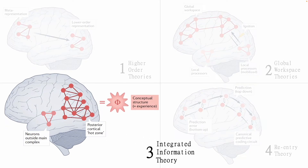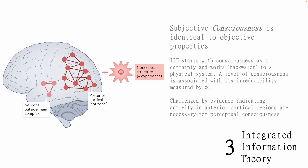Our third theory is integrated information theory. Seth and Bain describe how integrated information theory is different from the previous two theories, as it starts with consciousness as a certainty and works backwards. IIT rests on the understanding that if a conscious experience can be fully accounted for by a physical system, then the properties of the physical system must be constrained by the properties of the experience. Integrated information theory thus claims that any irreducible integrated information is conscious. Looking at the figure, IIT focuses on the so-called posterior cortical hot zone, as the parietal, temporal, and occipital areas exhibit the greatest degree of high-level information integration.